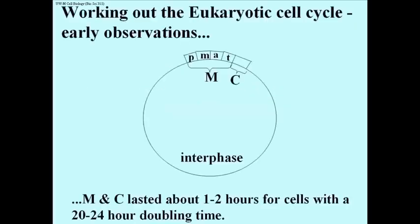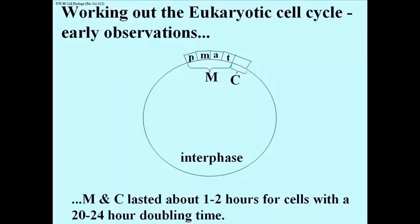Here are some very early observations in working out the eukaryotic cell cycle. What you see is a circle representing, from any one point to another, the generation of new cells. The top part is mitosis and cytokinesis, sometimes referred to as the M and C phases of the cell cycle.